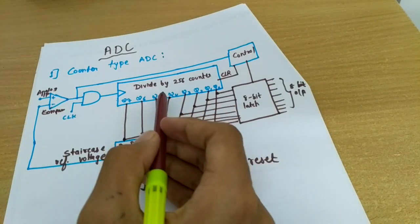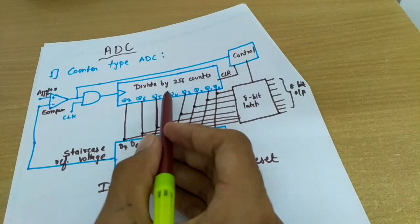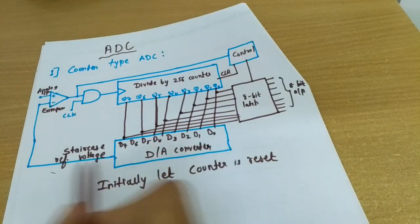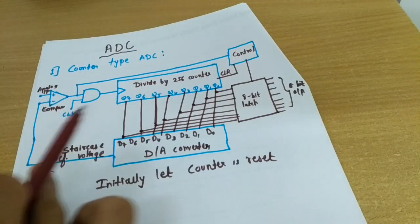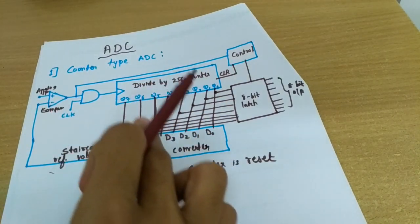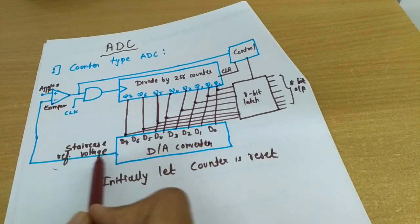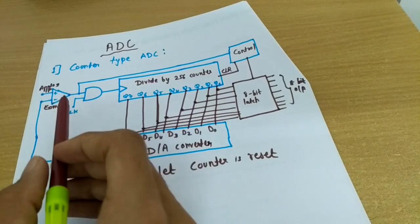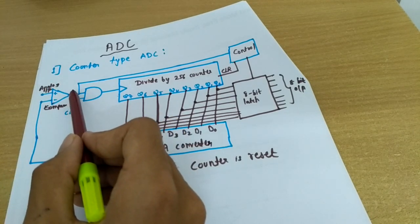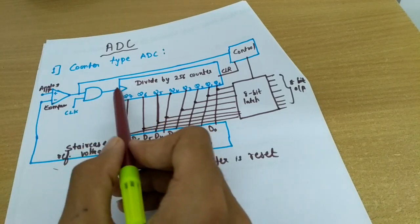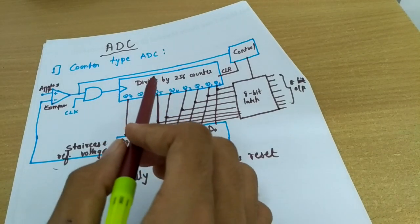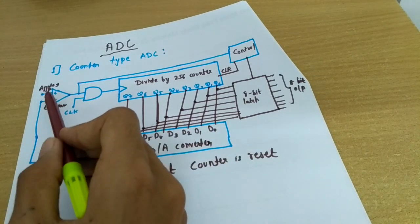The counter continues to advance from one state to the next, producing successively larger steps in the reference voltage. As the count increases, the reference voltage increases because the DAC output is directly proportional to its digital input. When the staircase reference voltage becomes equal to the analog input, the comparator output goes low, disabling the AND gate so no further clock pulses can pass through, and the counter stops.